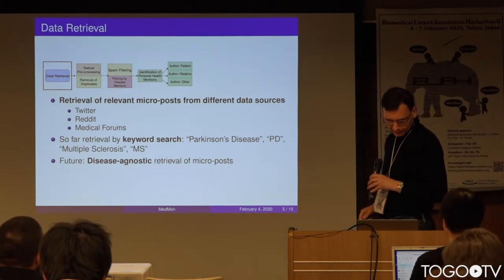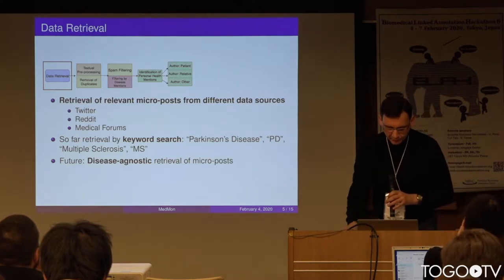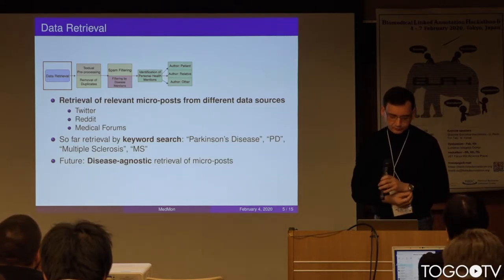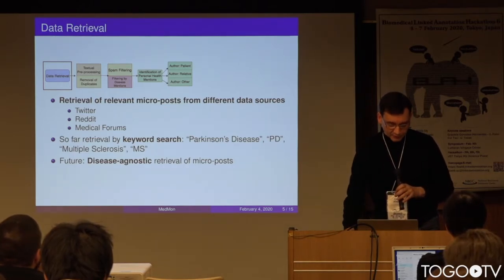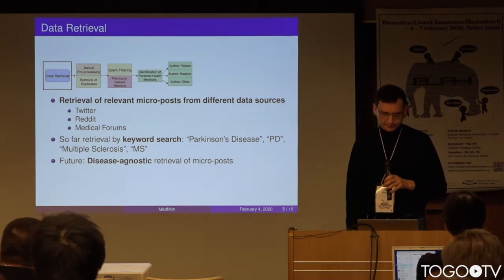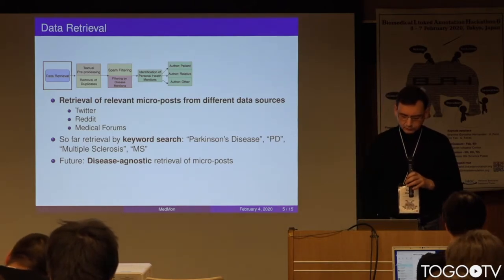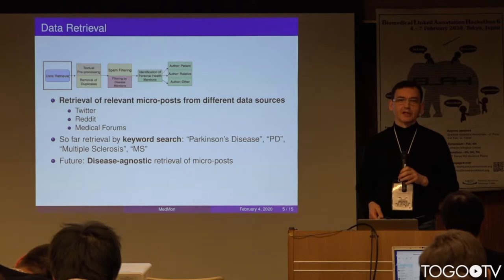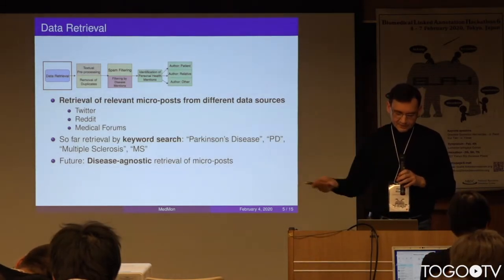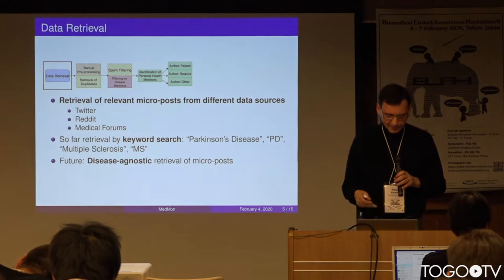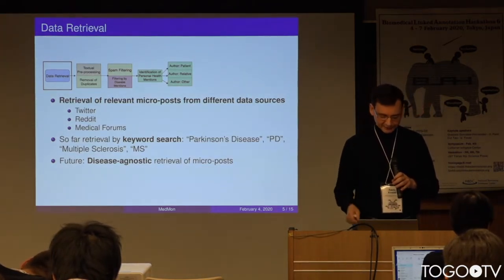We start with the initial sources. The initial filtering is done by keyword search, so it's very basic. We have keywords assigned for the diseases we're interested in, and obviously there will be many false positives — for example, Parkinson can be a person's name, and abbreviations like PD or MS can mean many different things. So we need to do a lot of filtering afterwards.